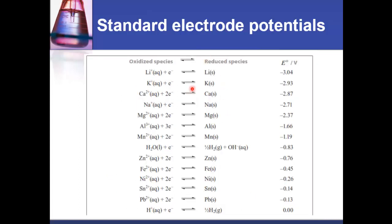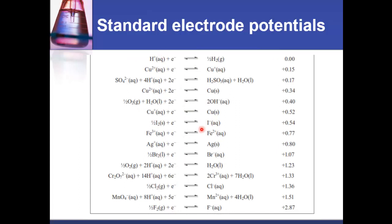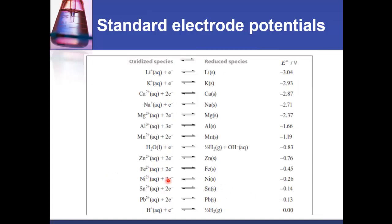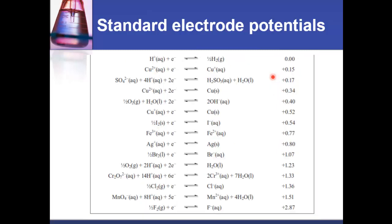The ones at the top of the table are stronger reducing agents, and the ones at the bottom are stronger oxidizing agents. The more negative the value, the more likely the species will be oxidized. The more positive the value, the more likely the species will be reduced.